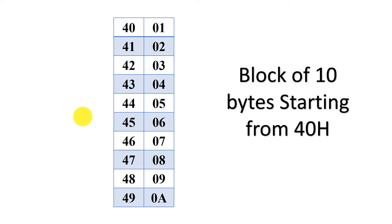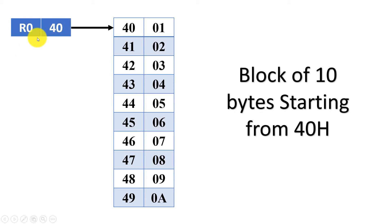We initiate a pointer so that R0 register will load 40h, pointing to the first data of this source block.